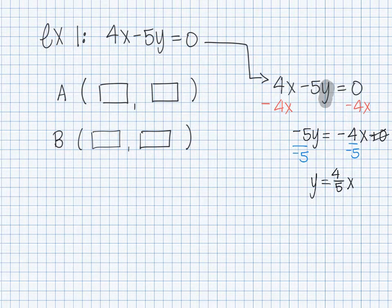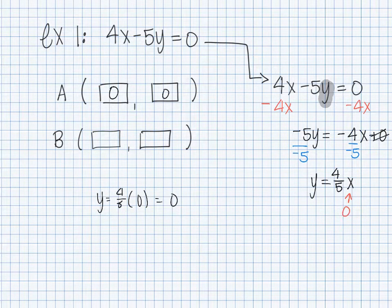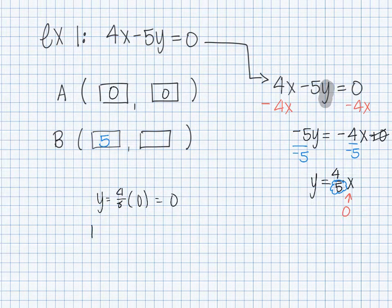negative 5, which is positive 4 over 5 times x, and I don't need to write plus zero. The first point you always pick is zero because it's easy — replace x with zero, so y equals 4 over 5 times zero, which gives me zero. So my first point is (0, 0). For the second point, I want to pick the denominator